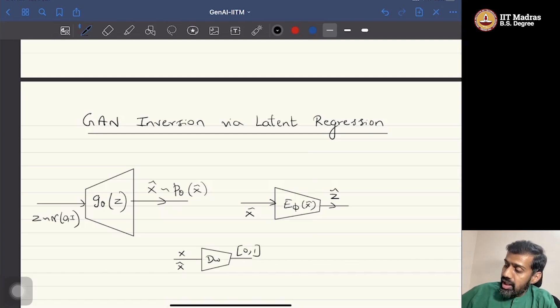However, we simply regress over the input latent vector, which is to just take Z and try to reconstruct it back using the encoder network. Now here Z cap is simply equal to the output of the encoder network for a given X or an X cap. Now how do we do this?